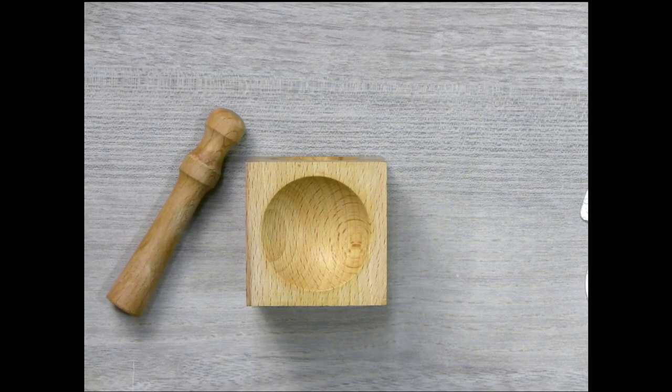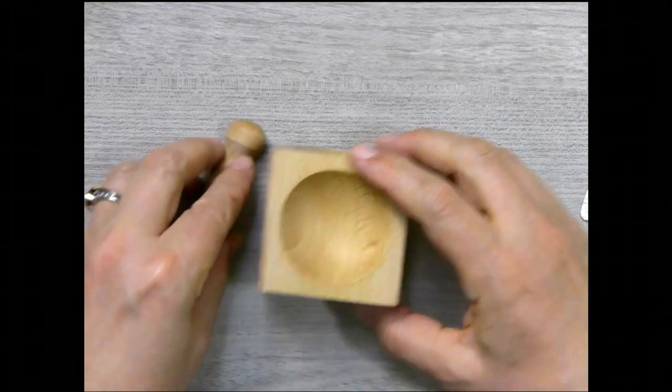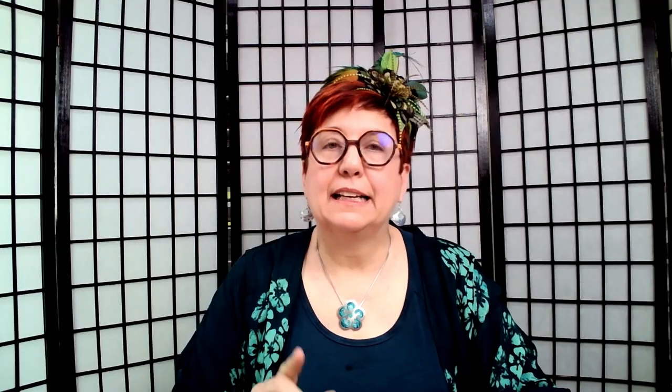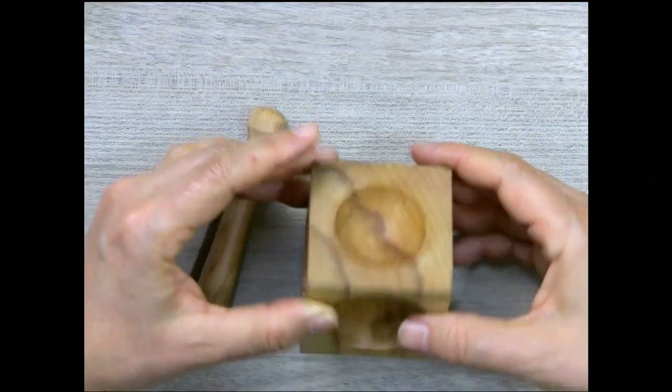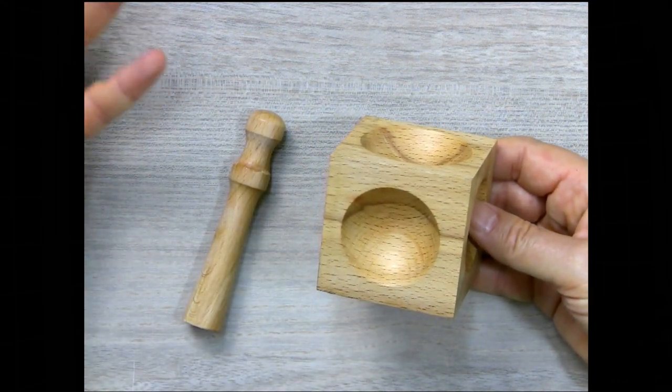Let's start off with doming pieces that are already fired. You're going to need a dapping block. Now they make these in metal and wood. Get the wooden dapping blocks. Wood won't mark up your piece, won't ding up your piece.